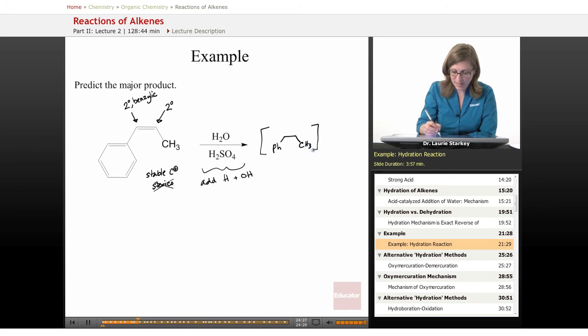And how do we get to the benzylic carbocation? What does that mean? That means we protonate in the other position. The hydrogen goes here so that the carbocation goes in the position we want.